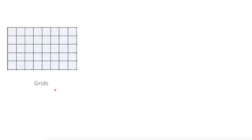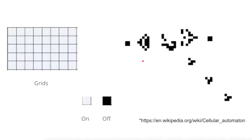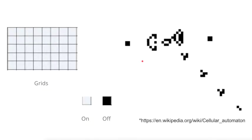A cellular automata consists of a regular grid of cells, each in one of a finite number of states, such as on and off. For each cell, a set of cells called its neighborhood is defined relative to the specific cell. An initial state is selected by assigning a state for each cell. New generations are created according to some fixed rule.